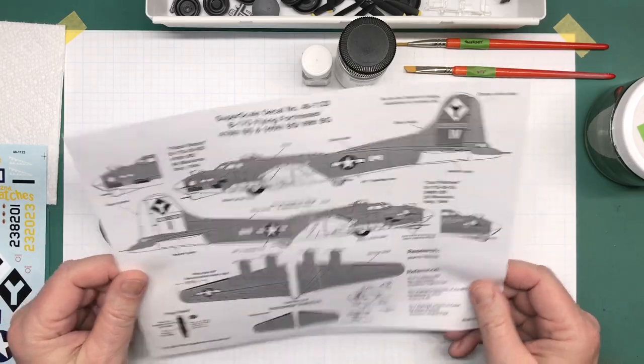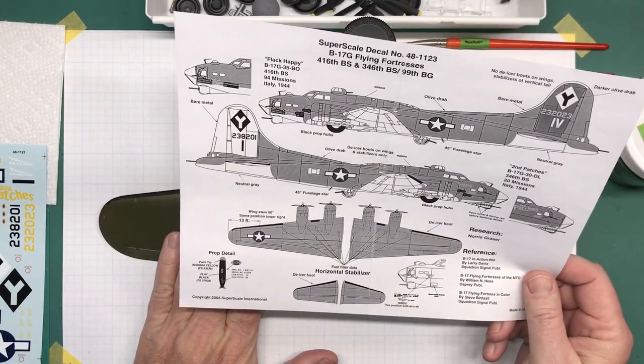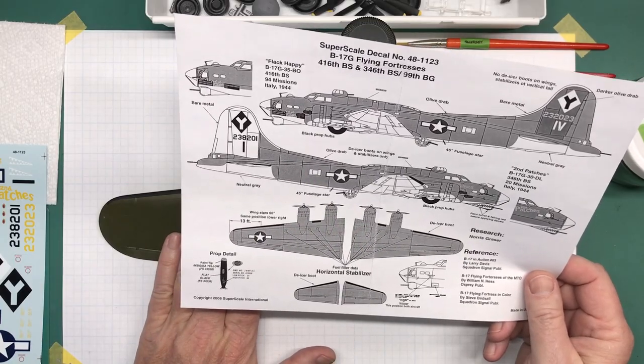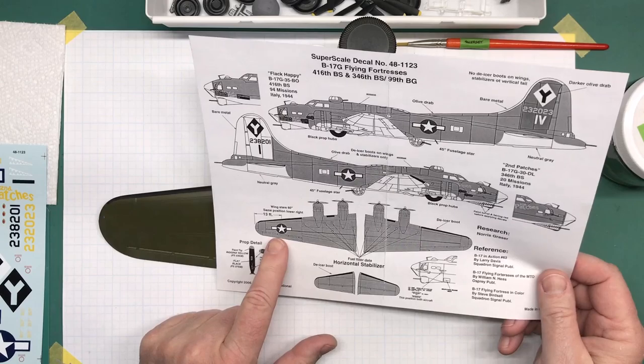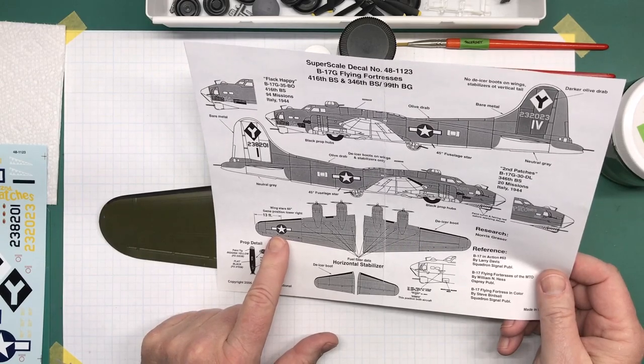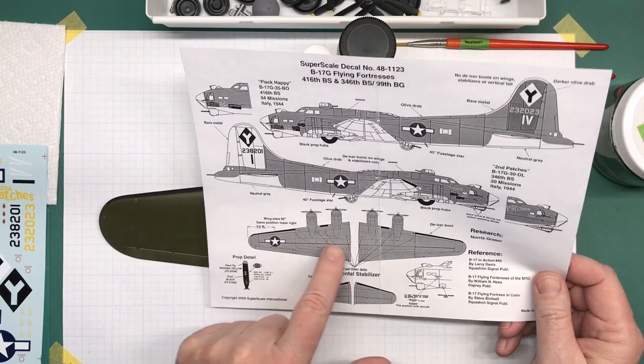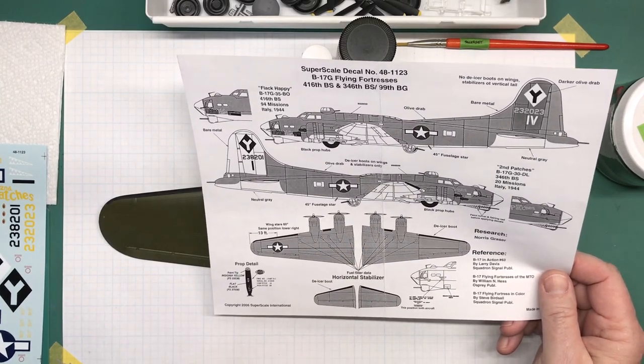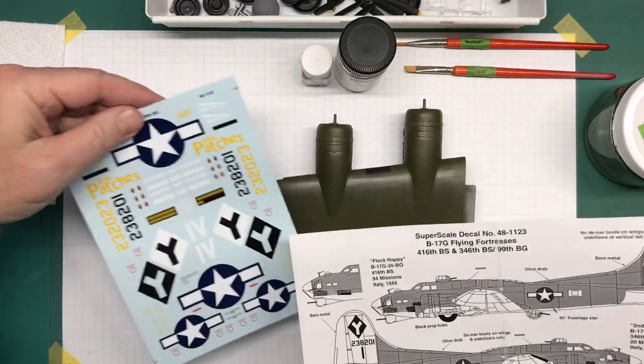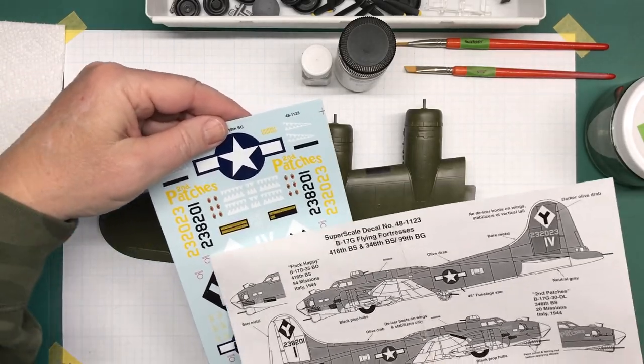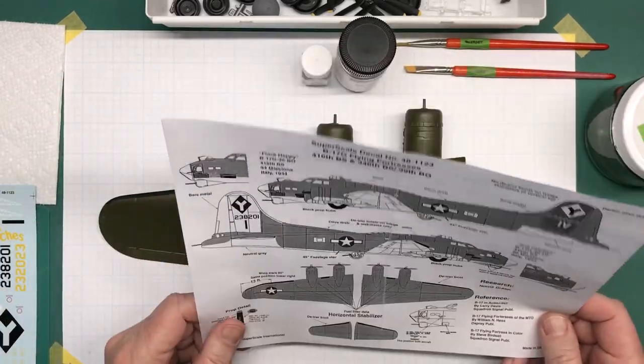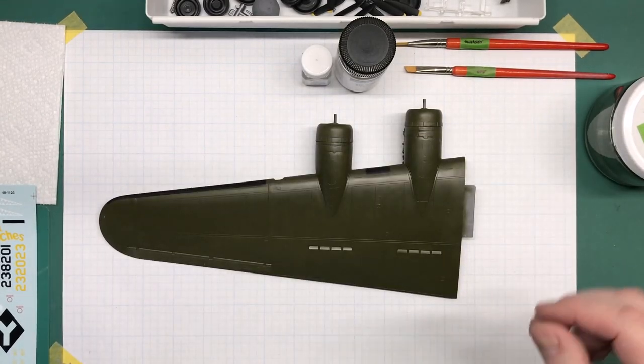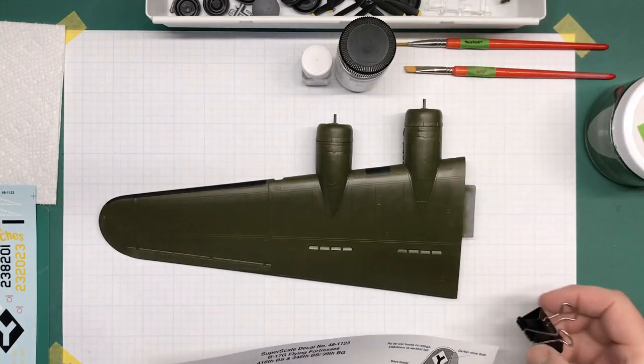So, I am going to start with the left wing, or the port wing, depending on how you want to call it. And we have got star and bars, and then all of the fuel filler decals. Alright, so I am going to get some of those cut off, and get ready to start putting these babies on here.